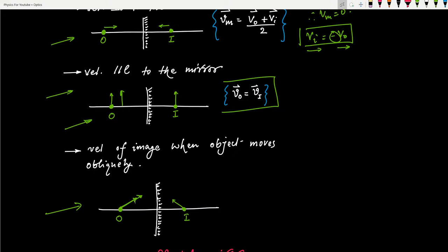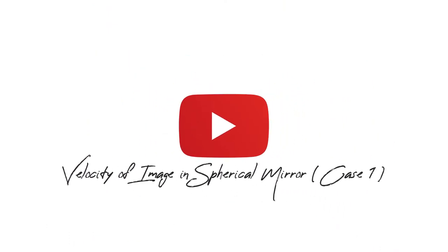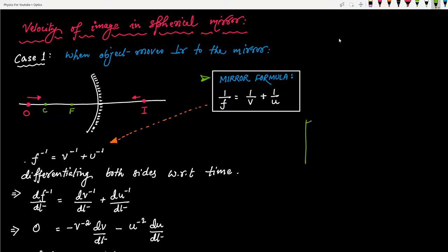Let's now start the main topic for this video: velocity of image in the case of a spherical mirror. There are two cases, similar to what we learned for velocity of image in a plane mirror. In order to find the velocity of the image, we need the relationship between v and u — that is, the relationship between object distance and image distance with respect to the mirror. In the case of a plane mirror, that relationship was very easy.